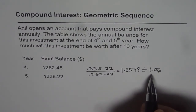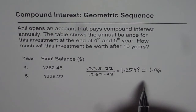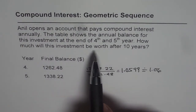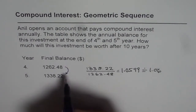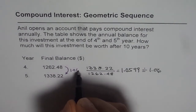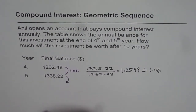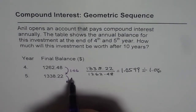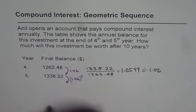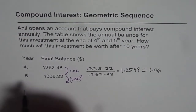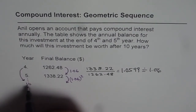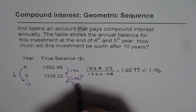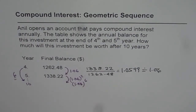So 1.06 is the growth factor by which the amount is being multiplied every year. Now we need to find how much this investment will be worth after 10 years. If we start from the 4th year, then in the 5th year it is the 4th year times 1.06. In the 6th year it would be 1.06 squared times the 4th year value. Going from year 4 to year 10 is 10 minus 4 = 6 years, so the factor should be 1.06 to the power of 6.